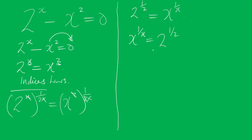Rearranging: x to the power 1 over x is equal to 2 to the power 1 over 2. From this expression you can see that x is equal to 2, because if you put 2 here, both sides match by equivalent expression.